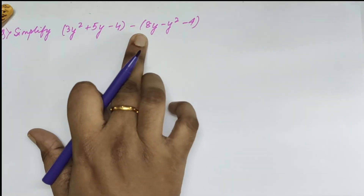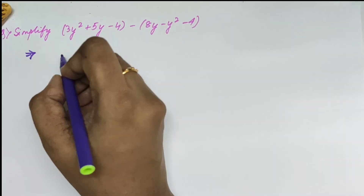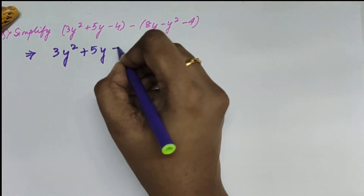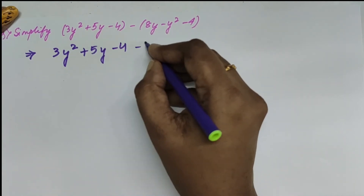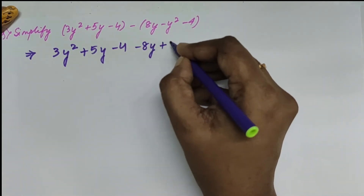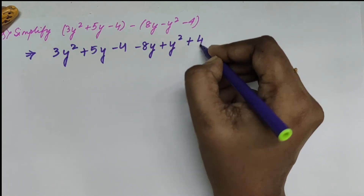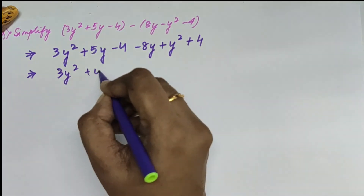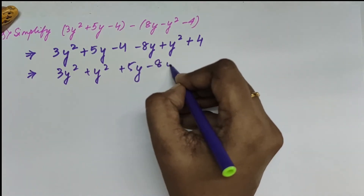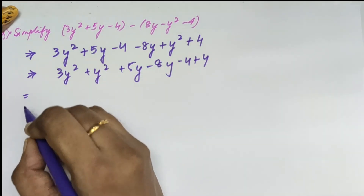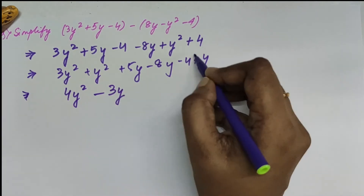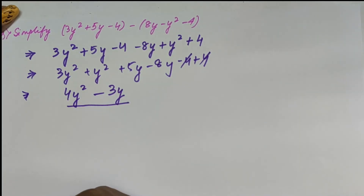Let us try simplifying the next question. The symbol between the two expressions is minus, so I use the horizontal method. We write 3y² plus 5y minus 4, and when we open the bracket the symbol changes, giving minus 8y plus y² plus 4. Grouping like terms and solving: we get 4y² minus 3y, and the constant terms cancel. So our final answer is 4y² minus 3y.